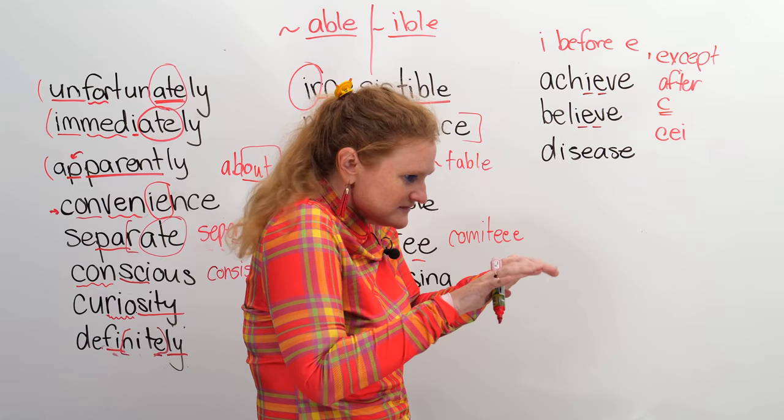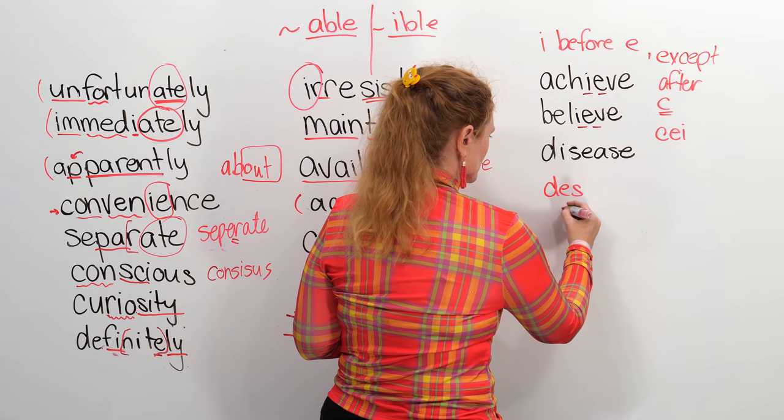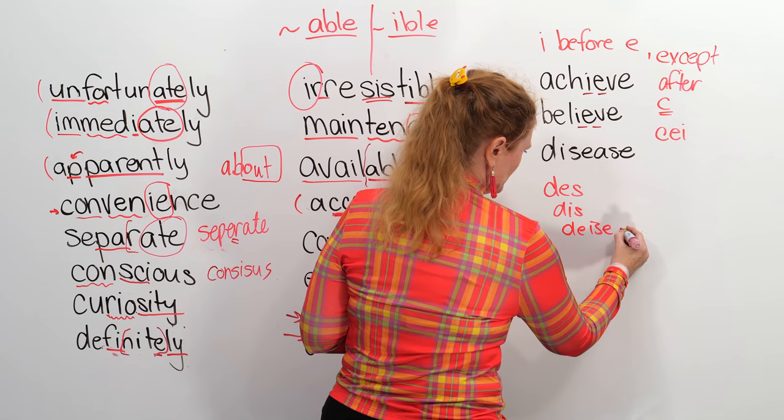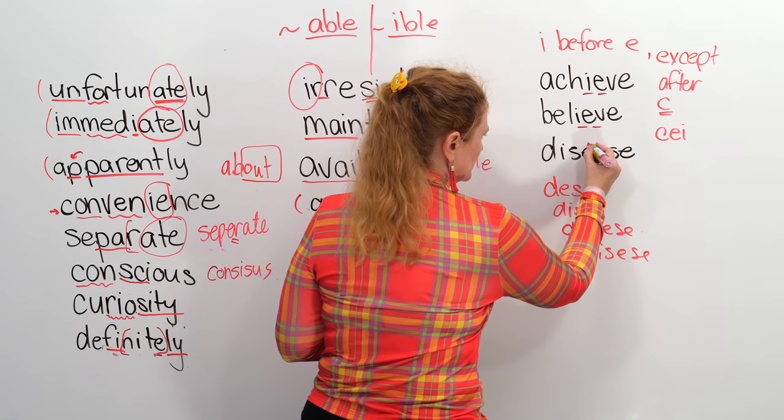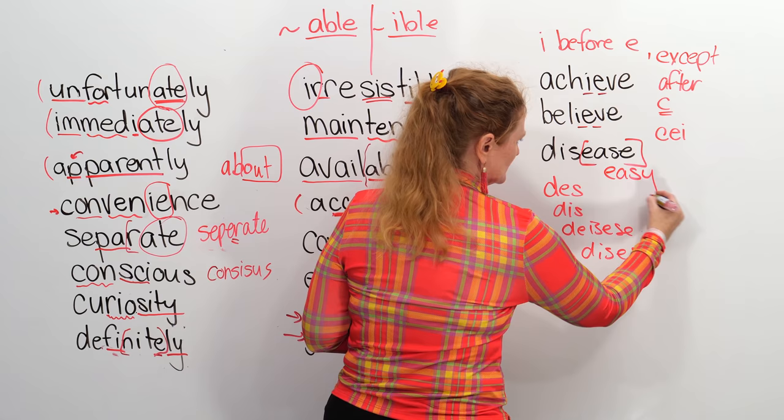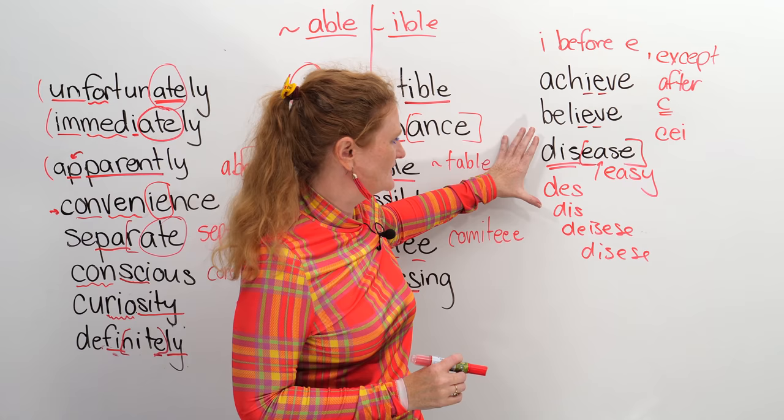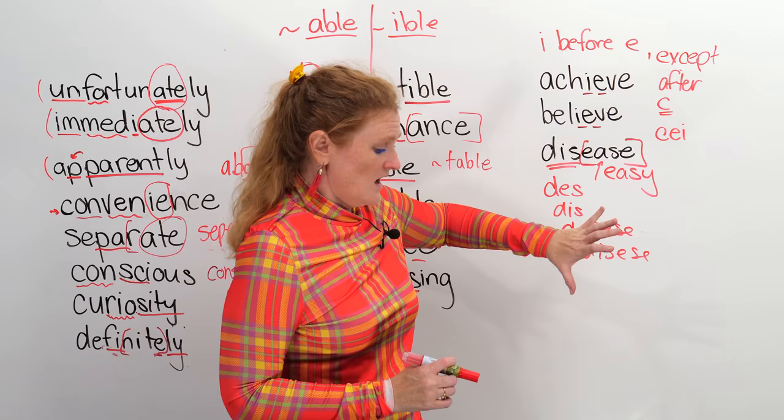Disease. I always kind of try and type it. I know there's an S somewhere. But then when you look at it, you see the word 'ease.' Oh, that's easy — like ease. Disease. So you can think of it as 'dis,' and then 'ease' — like easy.